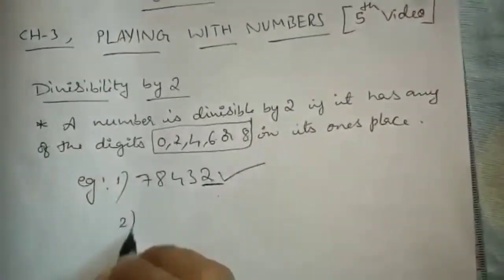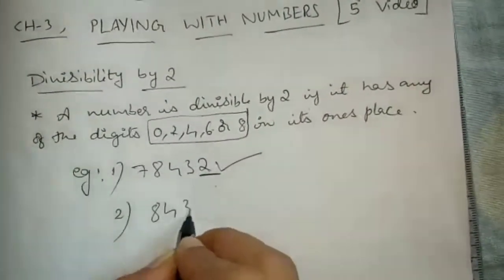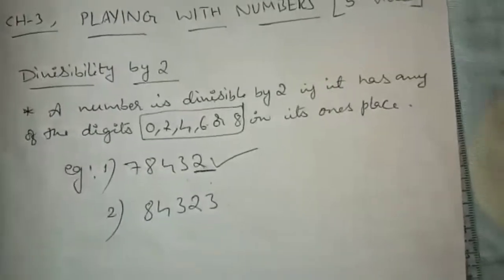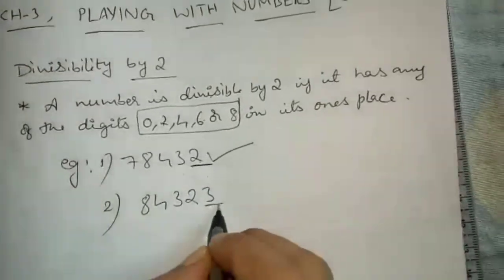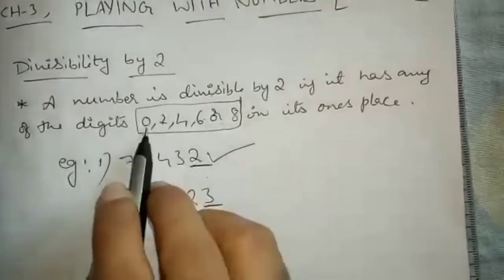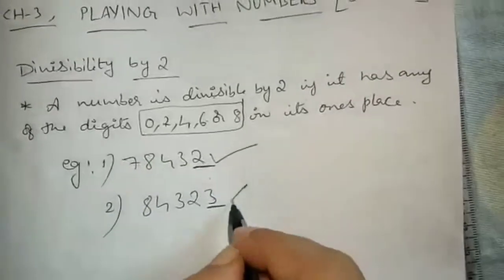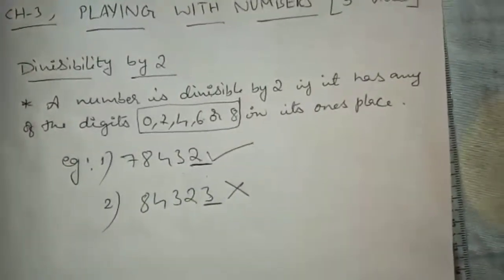One more example: now see the units place — it is 3. Since 3 is not in the list 0, 2, 4, 6, 8, this number is not divisible by 2.